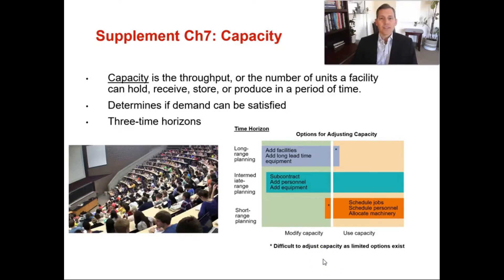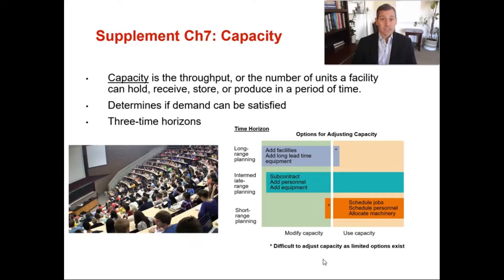In this video we're going to highlight three different topics: capacity, bottlenecks, and utilization. Capacity and bottlenecks are covered in the supplement to chapter 7, so you just might want to go over the areas that cover those topics. The utilization formula provided in this video is not in our textbook at all, so you'll need to know how to calculate utilization per employee or workstation.